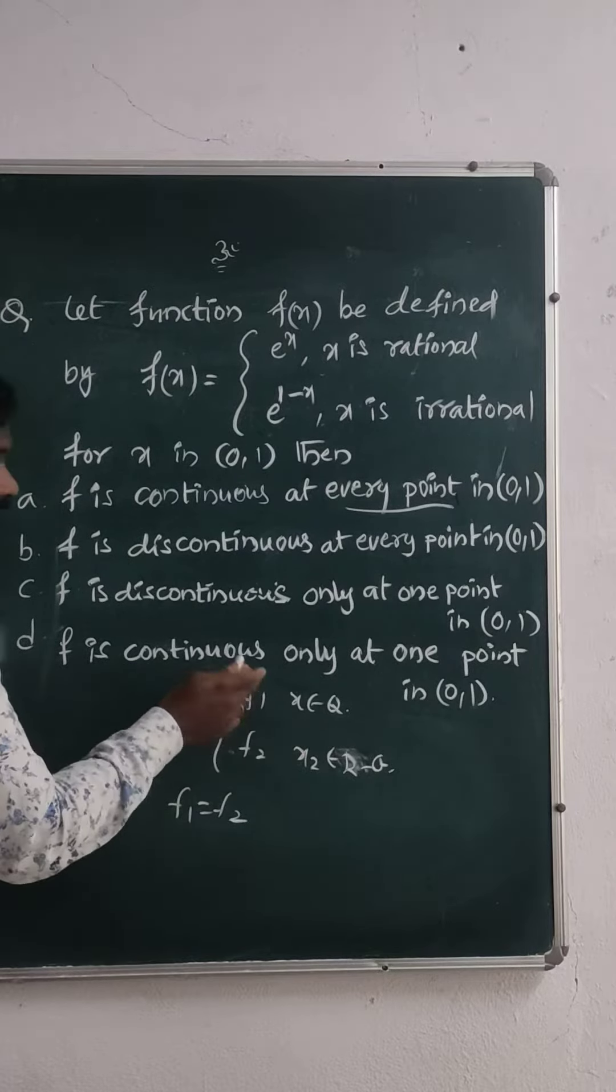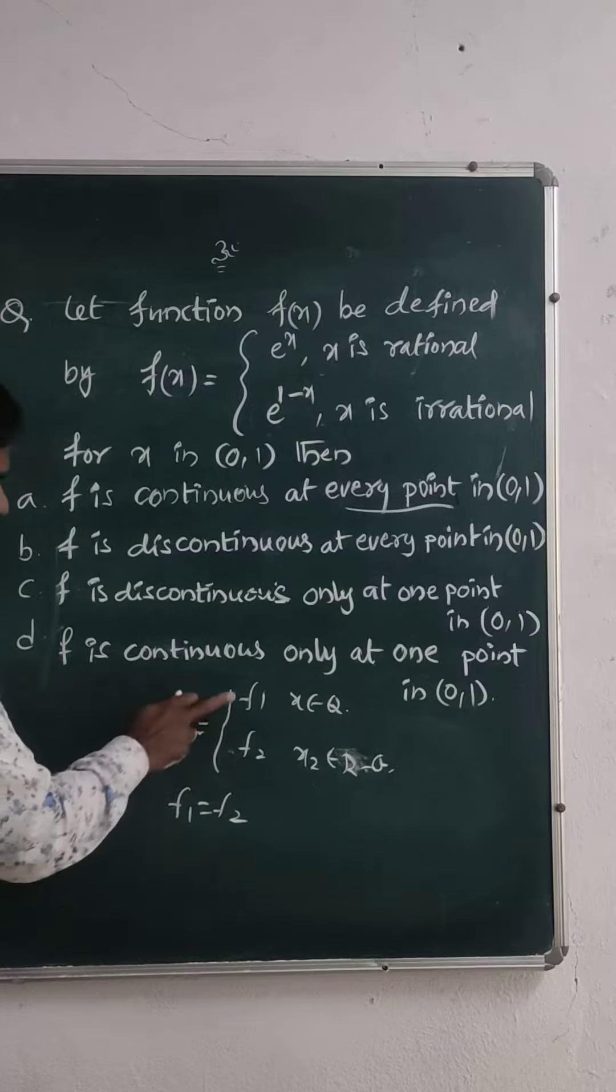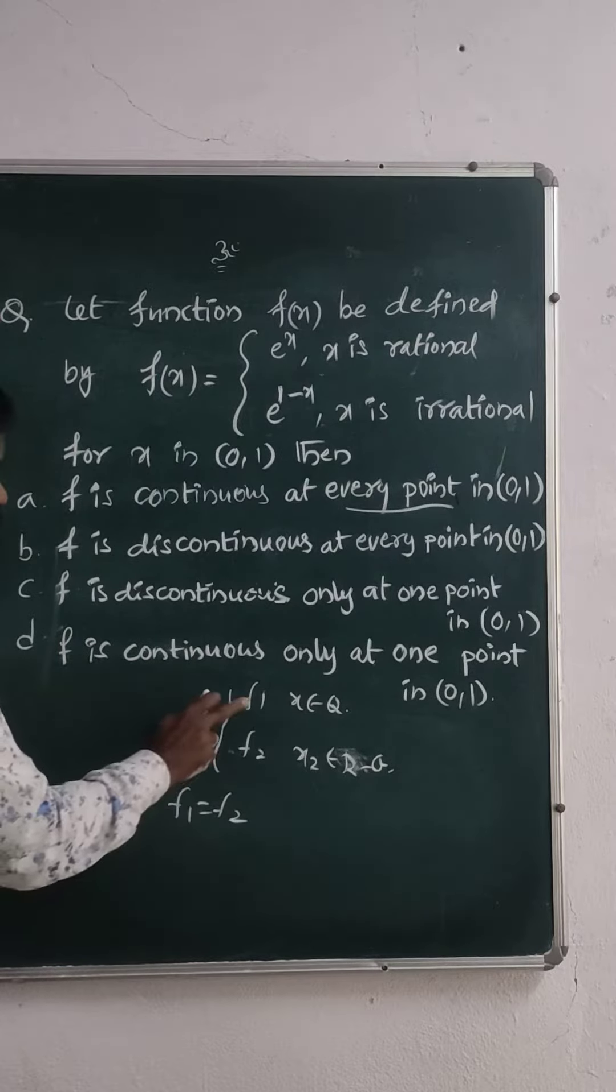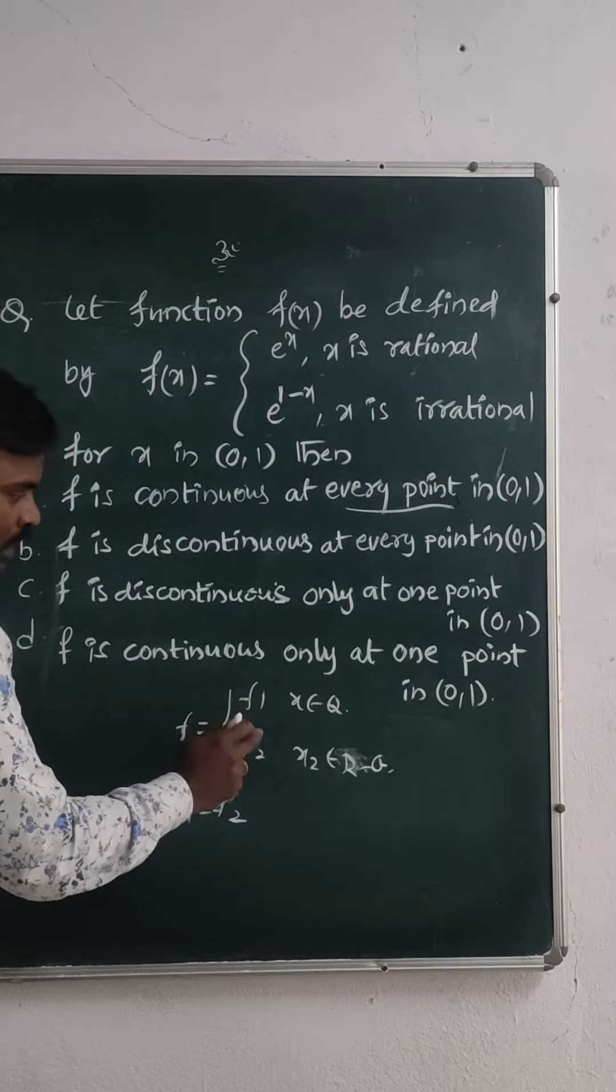At that point the function is continuous. f1 equals f2 we have to do, you will get x value, at that point only the function is continuous.